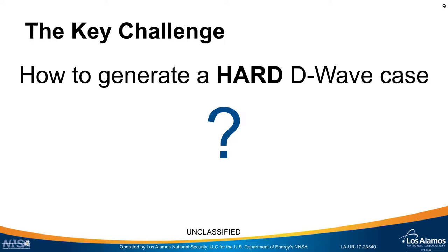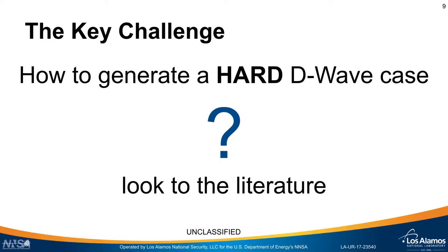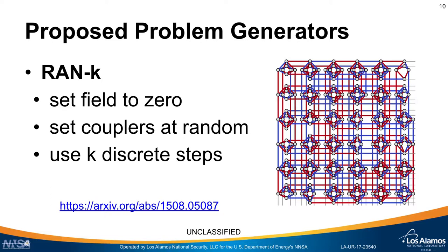So we have the challenge of how to generate hard or interesting random D-Wave cases, and essentially we're going to look to the literature. The first problem generator is the RAN-k case: the field on the chip is set to zero, and the couplers are set at random using k discrete steps. In the simplest example with k=1, the couplers are just set to minus one or plus one.